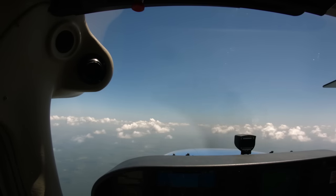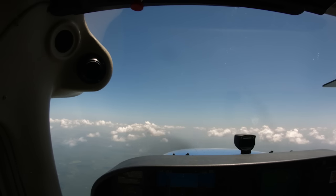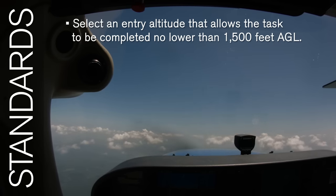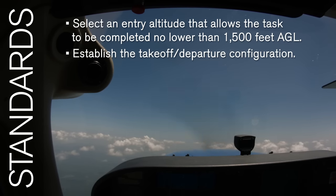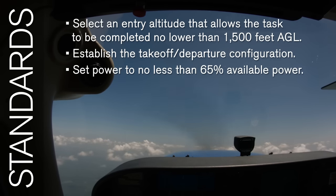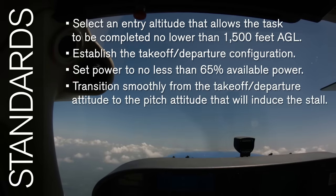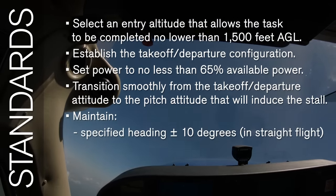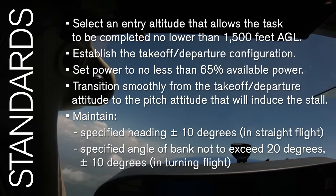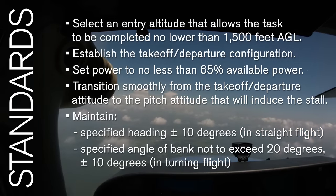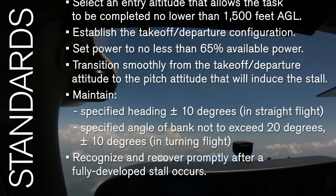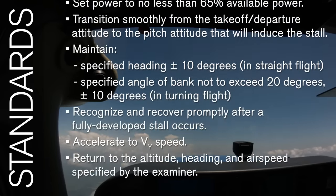Now that we've covered how to fly the maneuver, let's look at the end goals for your skills in a power-on stall. Some of the standards for the end-of-course checkride include: select an entry altitude that allows the task to be completed no lower than 1,500 feet AGL; establish the takeoff or departure configuration and set power to no less than 65% available power; transition smoothly from the takeoff or departure attitude to the pitch attitude that will induce the stall; maintain a specified heading plus or minus 10 degrees if in straight flight; maintain a specified angle of bank not to exceed 20 degrees, plus or minus 10 degrees, if in turning flight while inducing the stall; recognize and recover promptly after a fully developed stall occurs; accelerate to VY speed; and return to the altitude, heading, and airspeed specified by the examiner.